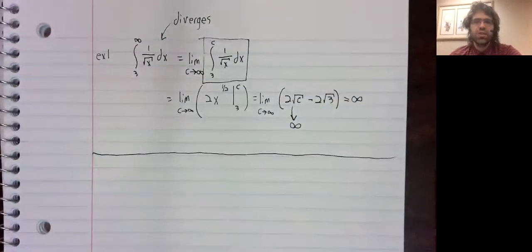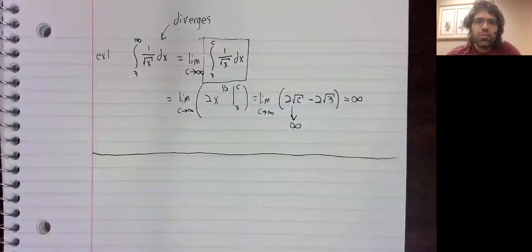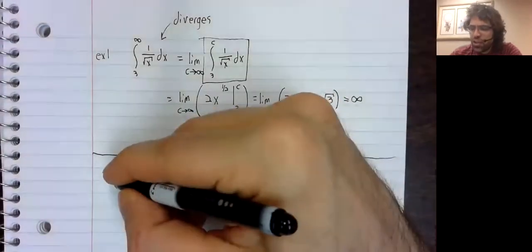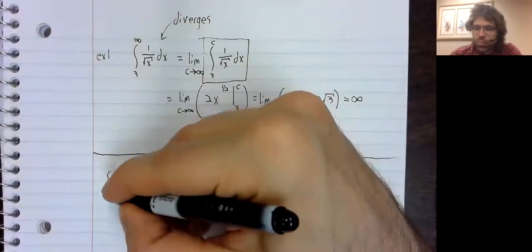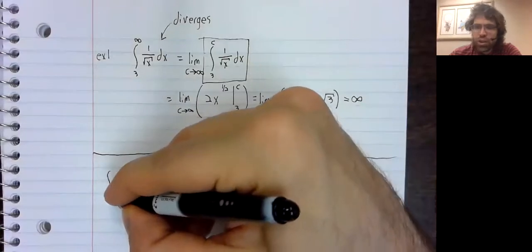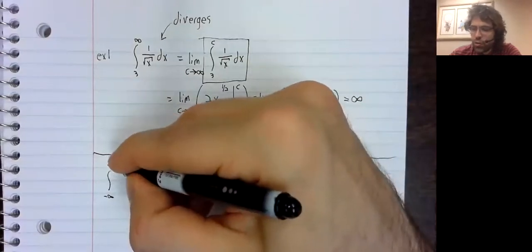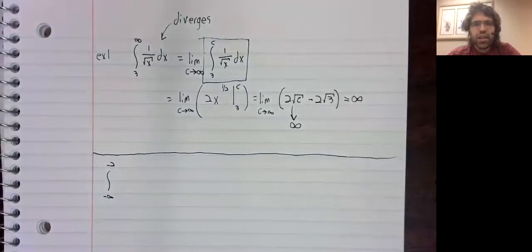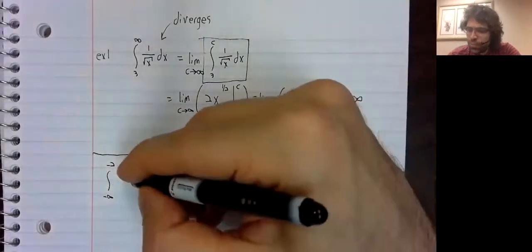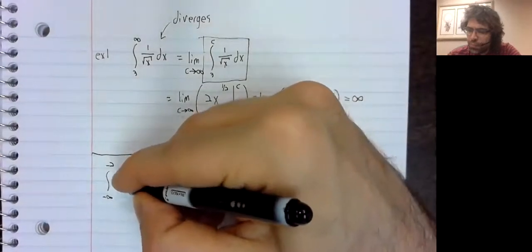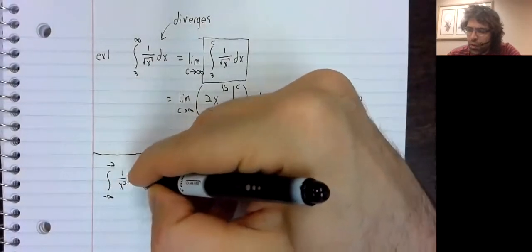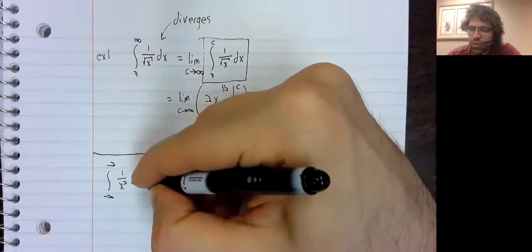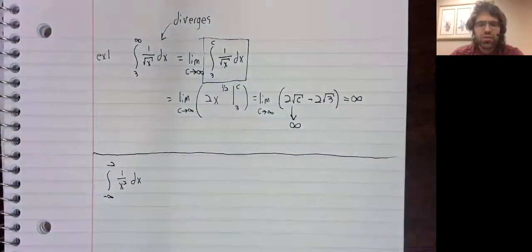I don't know why it goes out of focus sometimes. But let's dive right in to an improper integral that converges. The integral from negative infinity to negative two of one over x squared.